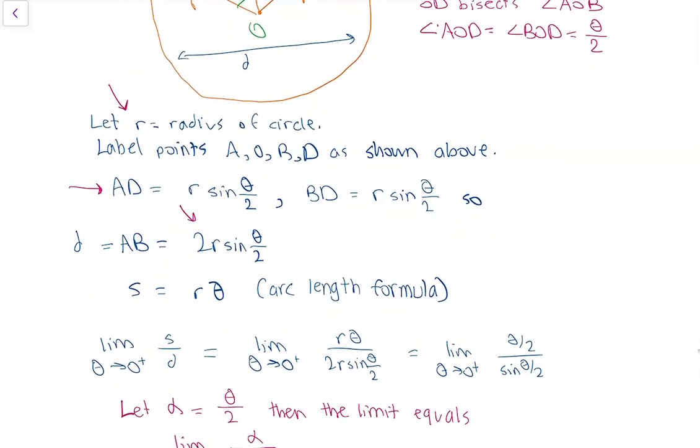Now we can start computing the value of this limit. So the limit of theta going to zero plus of s over d. We can now substitute our two formulas in terms of theta and r. So we get the limit of r theta divided by 2r sine theta over 2 and we can write this as the limit of theta over 2 divided by sine theta over 2.